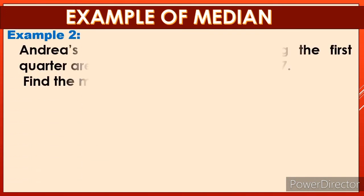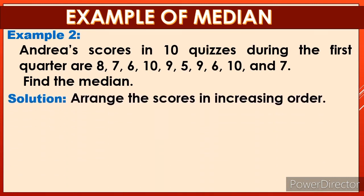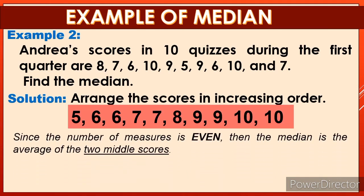Now let's have example number 2. Andrea's scores in 10 quizzes during the first quarter are 8, 7, 6, 10, 9, 5, 9, 6, 10, and 7. Find the median. The solution: we first arrange these scores in increasing order. Now we have: 5, 6, 6, 7, 7, 8, 9, 9, 10, 10. Then we find the middle value. Since the number of measures is even, the median is the average of the two middle scores. The two middle scores are 7 and 8.